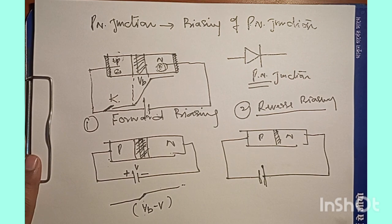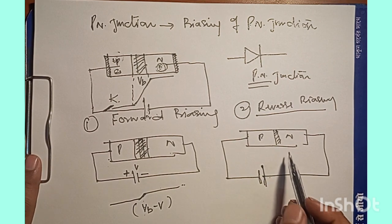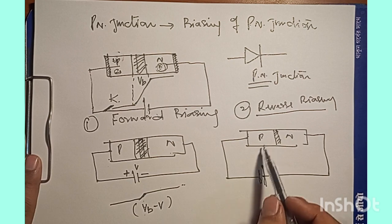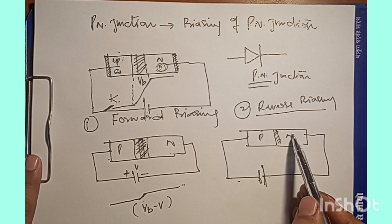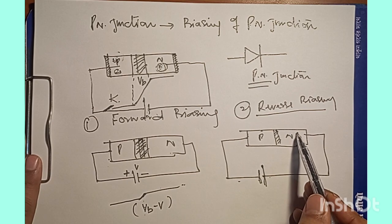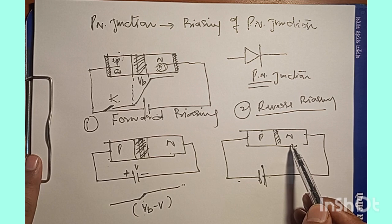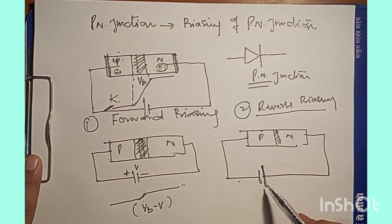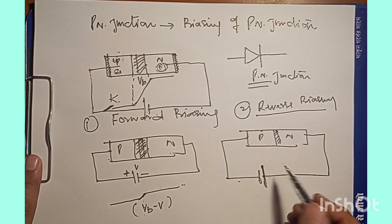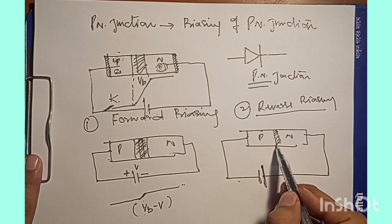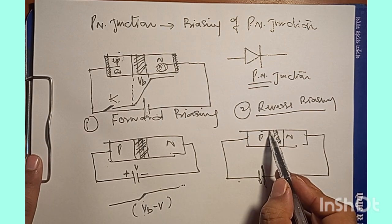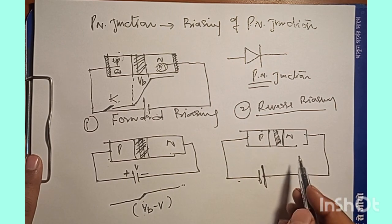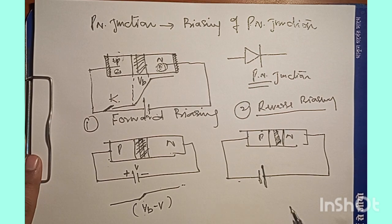What happens when we reverse bias a PN junction? The majority holes are attracted towards the negative terminal and the majority electrons are attracted towards the positive terminal of the battery. As a result, the size of the depletion layer is going to increase when we reverse bias the PN junction.